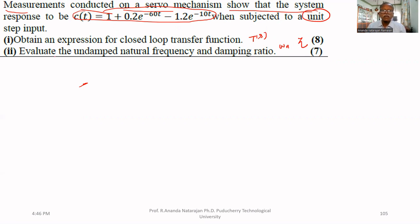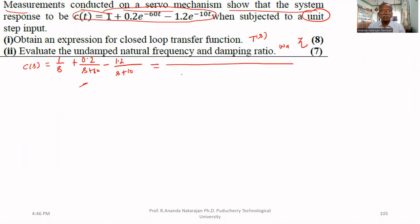First, let us find the closed-loop transfer function. C(t) is given, so let us find C(s). Taking the Laplace transform: C(s) = 1/s + 0.2/(s + 60) − 1.2/(s + 10).